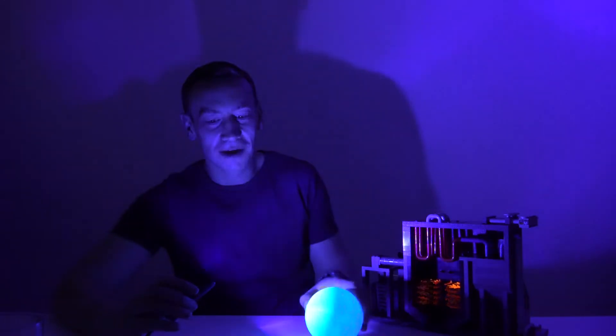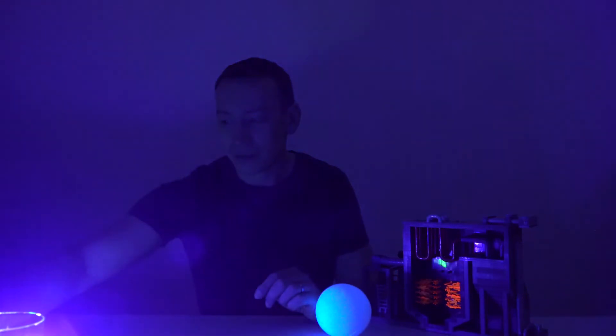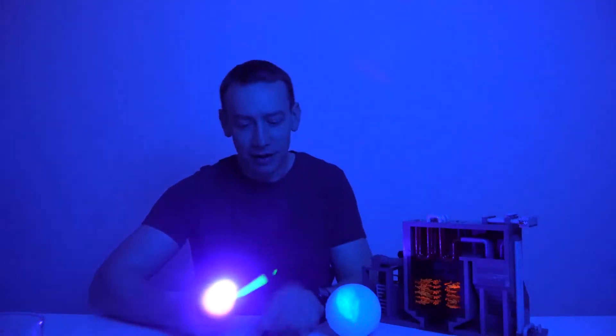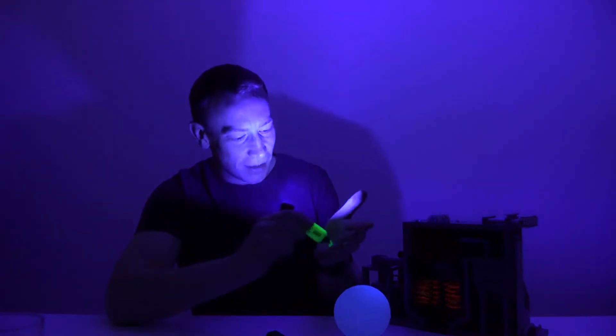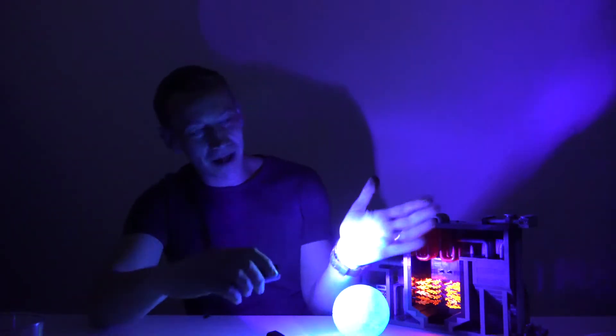White objects often fluoresce quite nicely. But also fluoresces are things like highlighters. So this is just a normal highlighter pen and if I draw on my hand we can see quite clearly the way that that fluoresces. Beautiful.